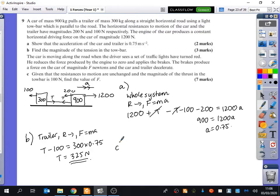Here's the part of the question you wanted to talk about. It now says the car is moving along the road when the driver sees a set of traffic lights having turned red. He reduces the force produced by the engine to zero and applies the brakes. The brakes produce a force on the car of magnitude F newtons, and the car and trailer decelerate. Given that the resistances to motion are unchanged and the magnitude of the thrust in the tow bar is 100, find the value of F.